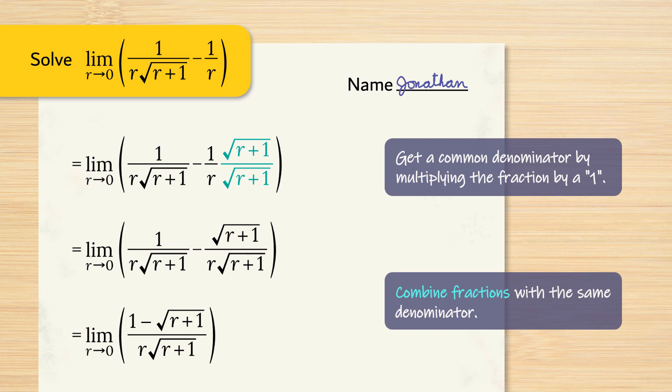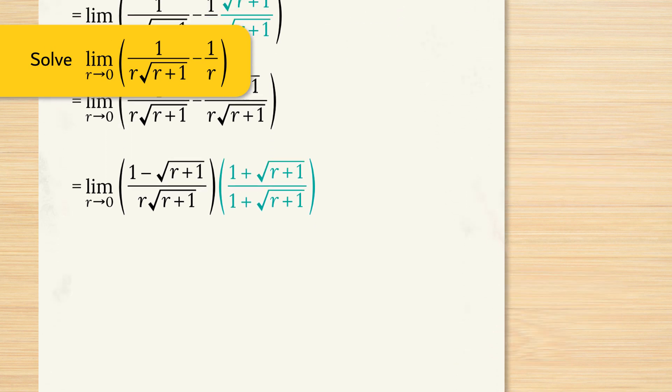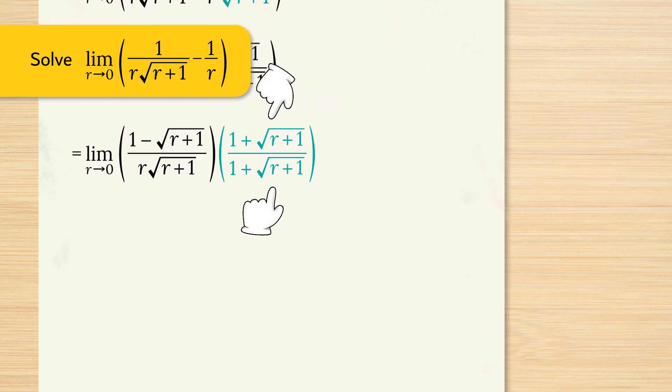We have a difference involving a square root which means that we're going to multiply by the conjugate. We have a minus in this case, therefore the conjugate will have a plus between the 1 and the square root of r plus 1. So multiply that conjugate to the numerator and the denominator.